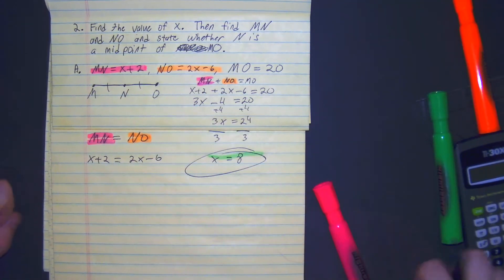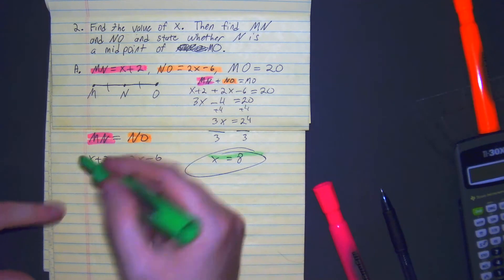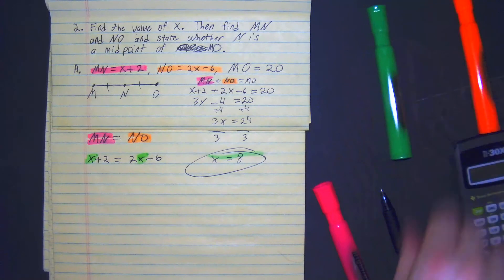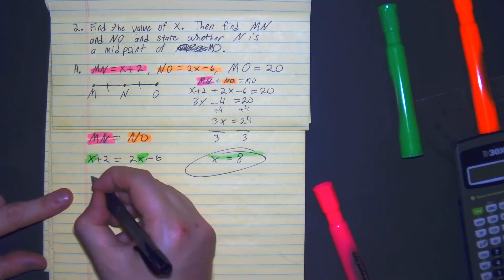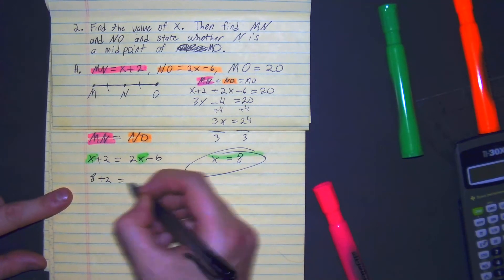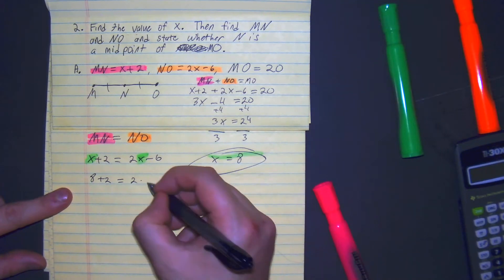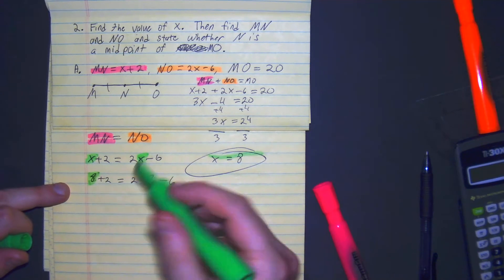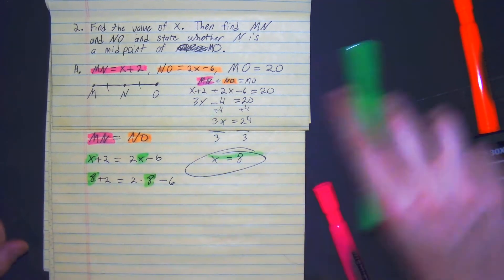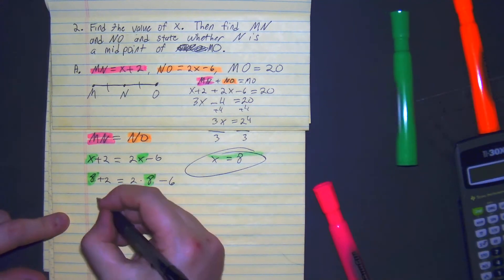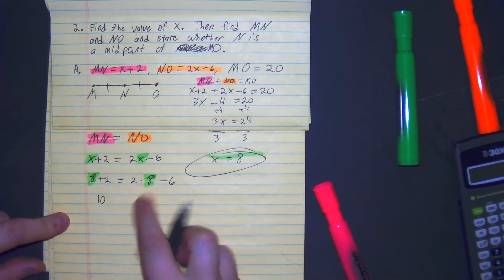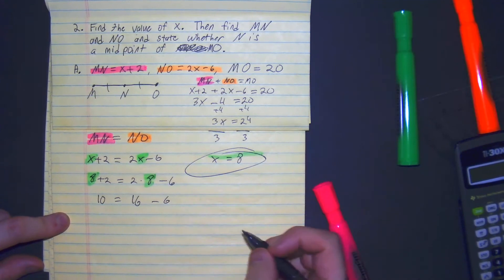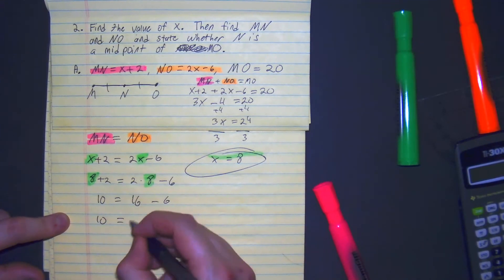Verified, good. Now we have a value of x, so we're going to plug it in and go from there. So we have 8 plus 2 equals 2 times 8 minus 6. 8 plus 2 is 10. 2 times 8 is 16 minus 6, which gives us 10 equals 10.